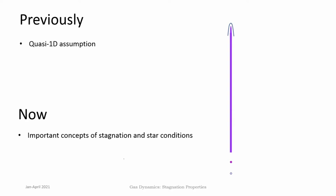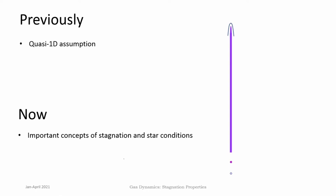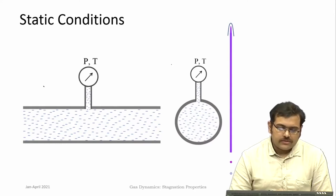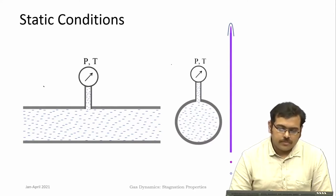Now we come to very important concepts of what are known as stagnation conditions and star or sonic conditions, and why they are important and where their applications lie. First we will begin with stagnation conditions. The common principle for both of them is the static condition, and then you can reach the stagnation conditions or the sonic conditions through a certain hypothetical process.